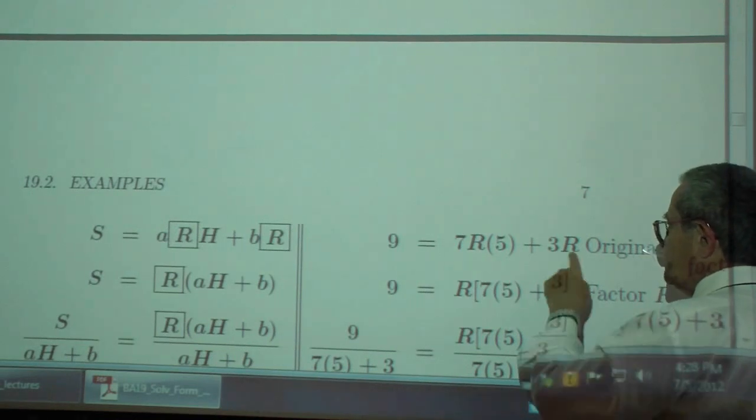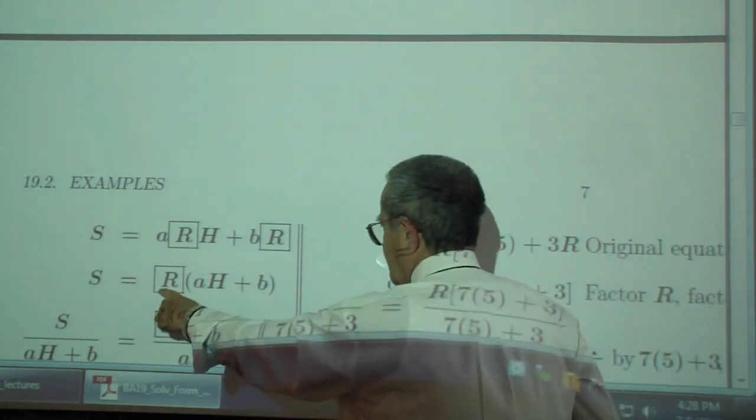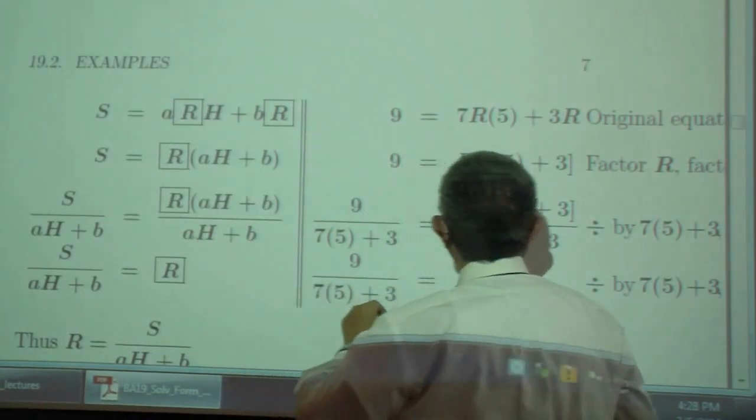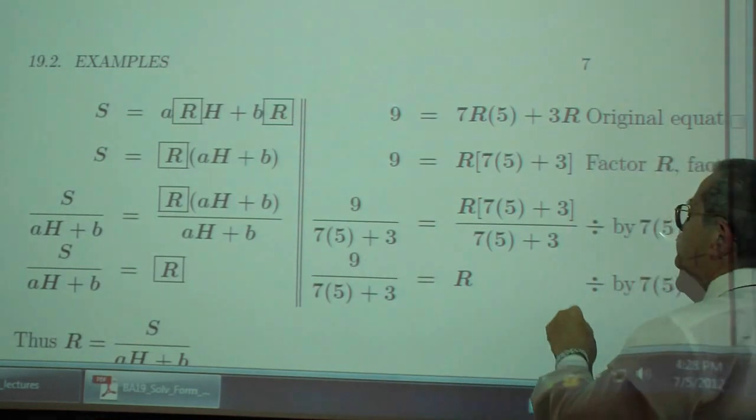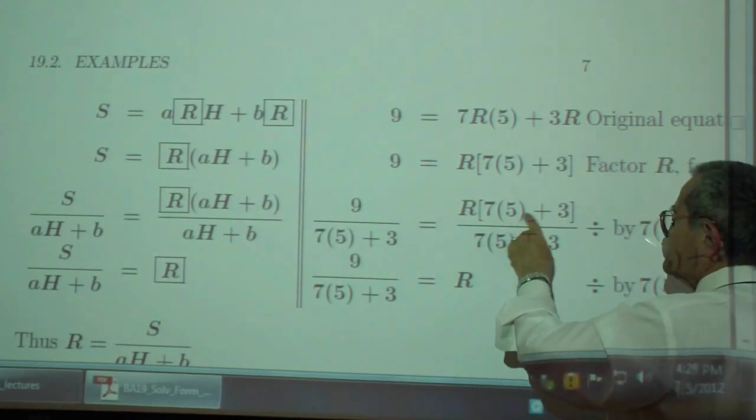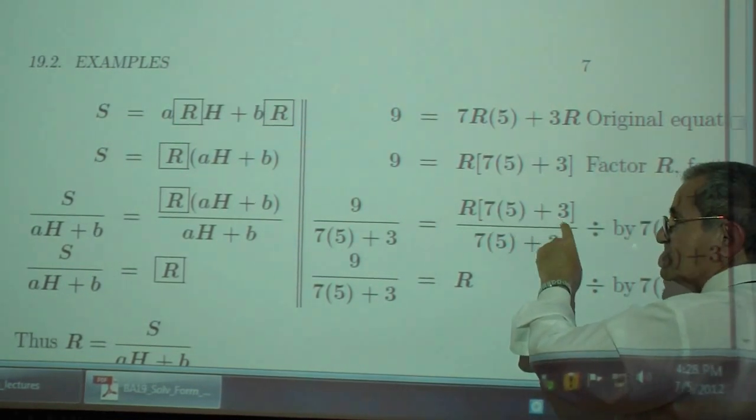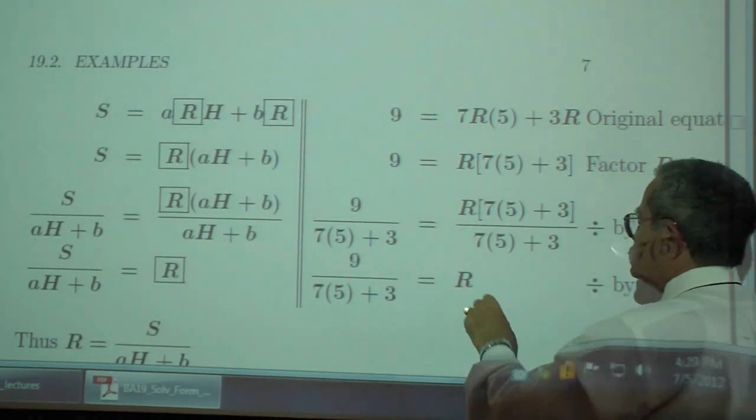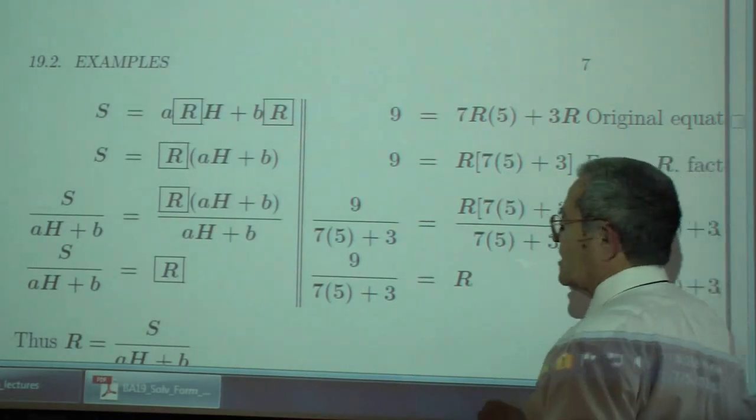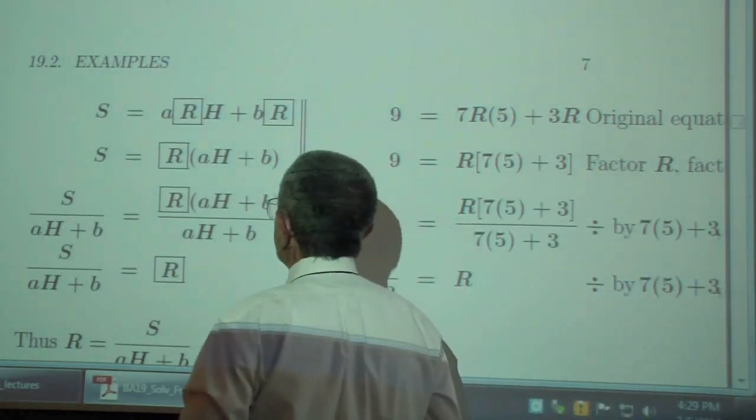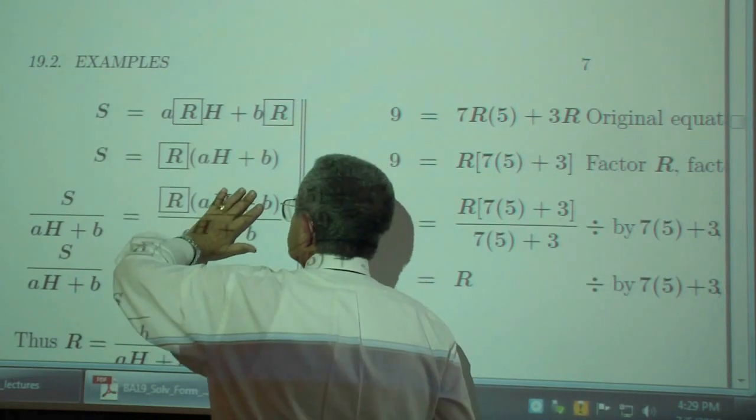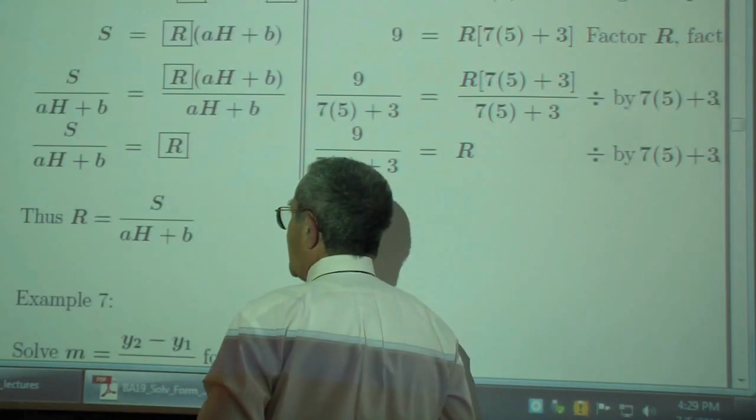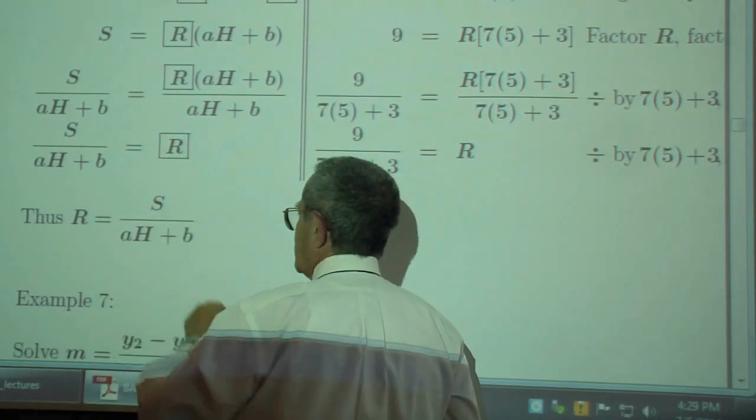So the first thing you do, you factor out R, then you divide by this constant right here. You divide by this constant, which is 7 times 5, 35 plus 3, 38. Keep it that way, that's like what you have over there. So you divide both sides by 38, you're just left with R. You divide both sides by AH plus B, so all this is just 1. You're left with 1 times R. So R is S over AH plus B.